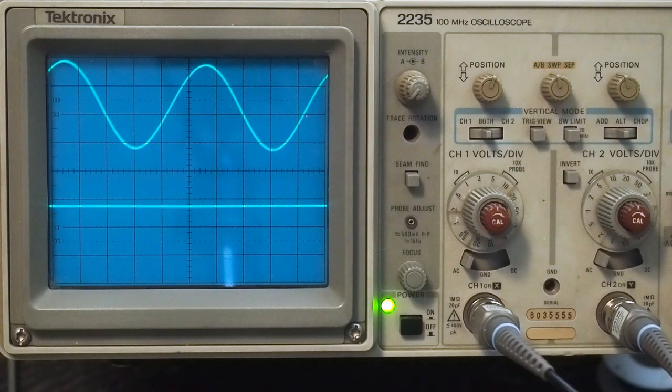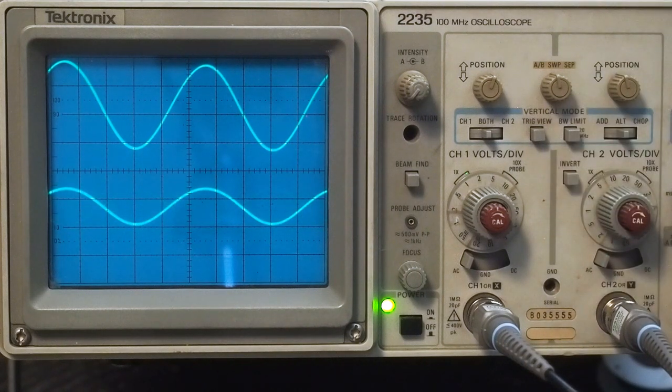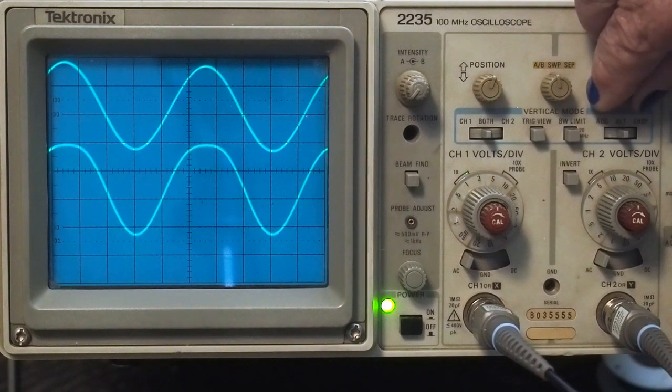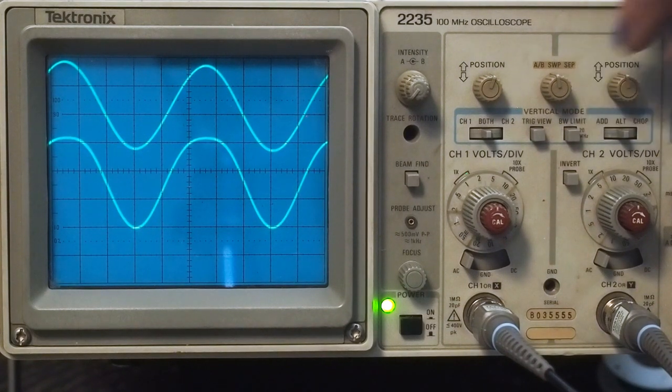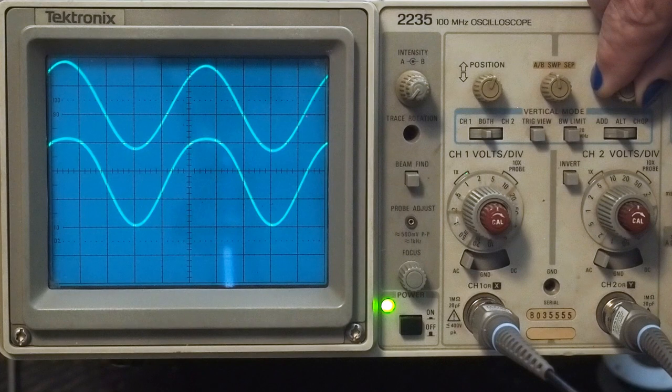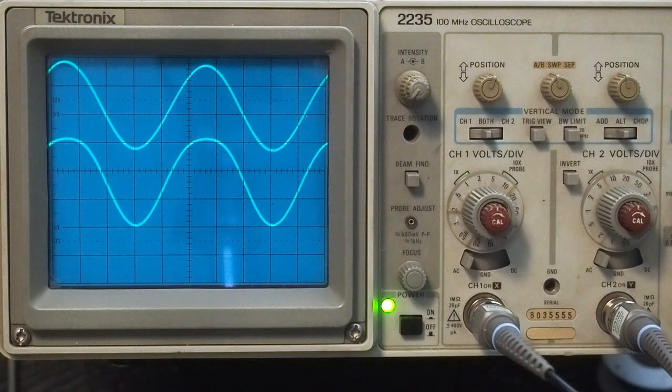We're going to do the same test on the grid of the direct coupled side. Hit our invert button. It starts clipping about right there, and we're getting 50, 100, 150. We're getting about 5 volts more peak to peak out of the direct coupled pair of triodes.